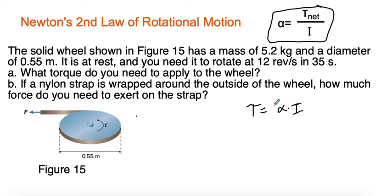So if we think about this: torque is just a rotational force, moment of inertia is analogous to mass, and alpha — the Greek letter alpha — is angular acceleration. So it's torque equals moment of inertia times angular acceleration, which mirrors force equals mass times acceleration.